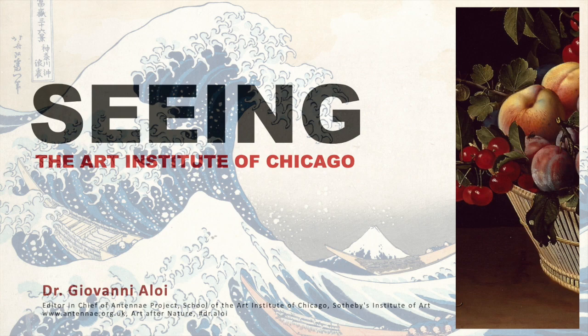Hey everybody, welcome to Seeing. This is a lecture I put together specifically for artists to help us think about the ideologies and philosophies that most often underpin our practice, the way in which we break down reality and reconstitute it onto canvas and paper or sculptural means, and the way we actually think about the world. Sometimes we forget about the power structures and the ideas we carry when we look at the world and how we translate what we see. I hope this lecture will be useful for understanding better what it is we do through this process of translation, how we do it, and what we might want to watch out for in terms of blind spots.